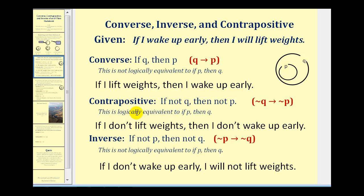The contrapositive would be if-not-Q-then-not-P. So we interchange the hypothesis and conclusion and also negate them. So the statement would be: if I don't lift weights, then I don't wake up early. Looking at the Venn diagram, if I don't lift weights, that means I'm outside Q. So if I'm outside Q, then I don't wake up early, which means I'm outside P. If I'm outside Q, I'm guaranteed to be outside P. Therefore, this statement is logically equivalent to if-P-then-Q.